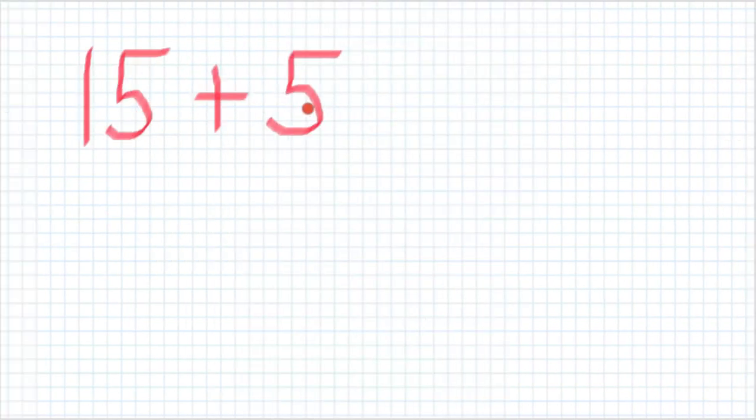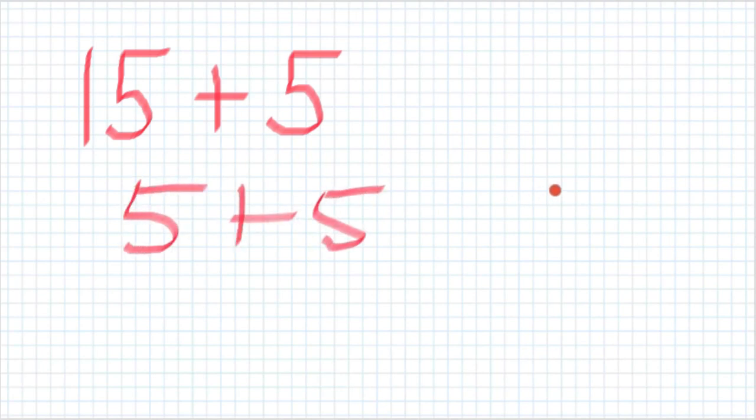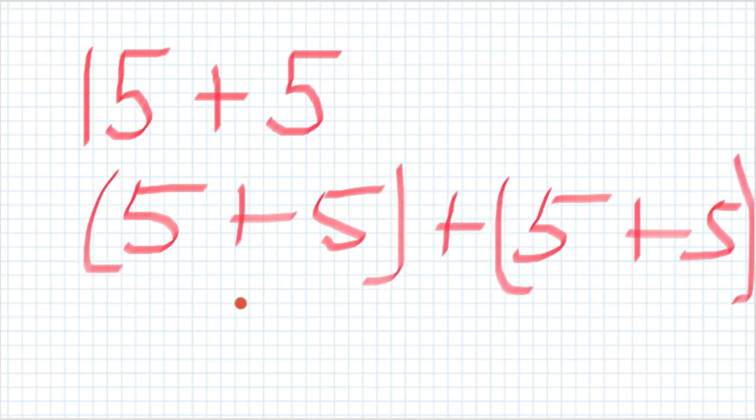Alright, let's go to the next one. 15 plus 5. Very simple. But, let's take a look at this. It's going to be 5 plus 5, and then let's do 5 plus 5, because to make 15, it's 5 plus 5 plus 5 plus 5, we have doubles, and so 10 plus 10 is equal to 20.